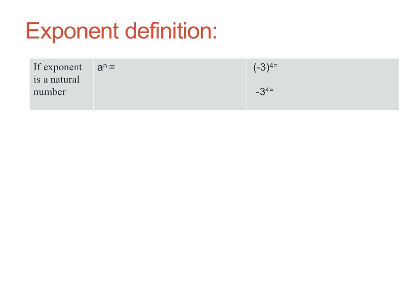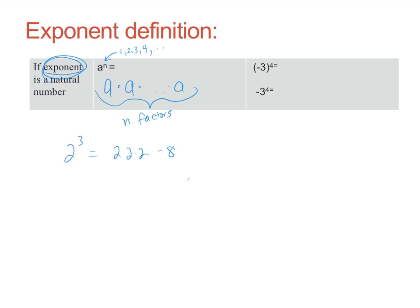Now, the definition of an exponent when the exponent is a natural number — meaning one, two, three, four, etc., not fractions or negatives — is defined to be n factors of a all multiplied together. So a to the nth equals a times a times ... times a, n factors of a. For example, two to the third means three twos: two times two times two, which is eight.